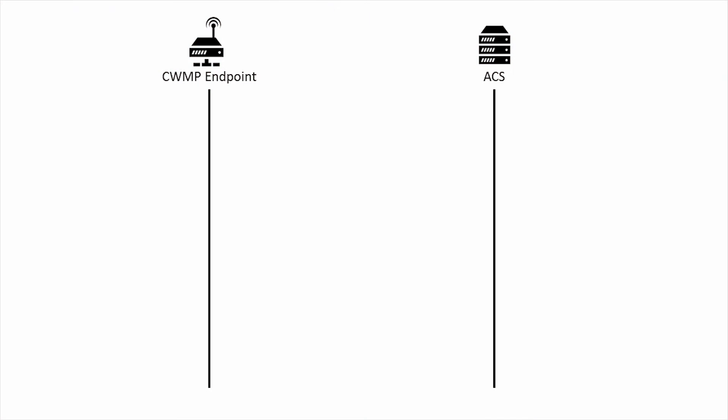We'll touch on all of these eventually, but for now let's jump right into what the protocol is and how it works. Fundamentally, TR-69 describes the interaction between an auto-configuration server, or ACS, and one or more CWMP endpoints usually residing on a device in the broadband user's home network.